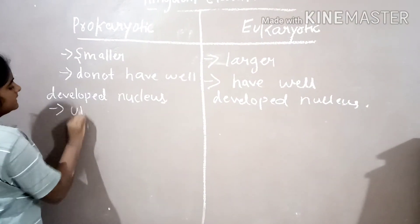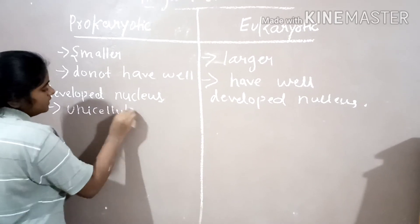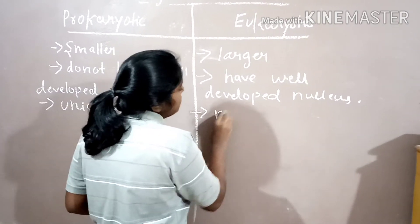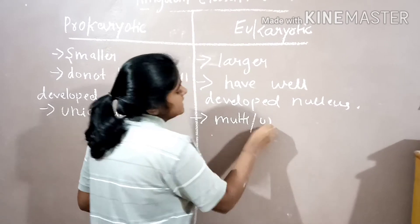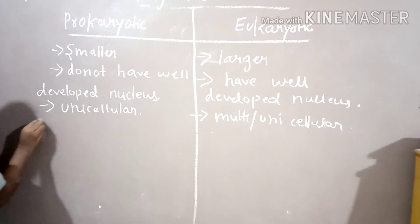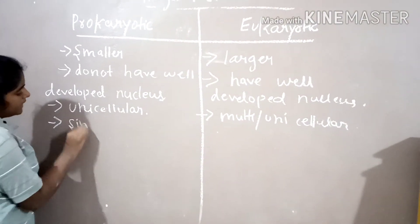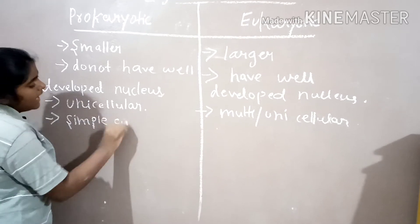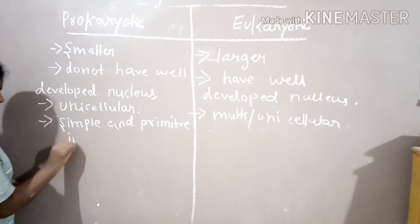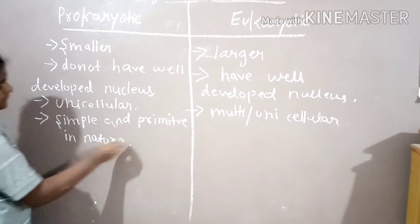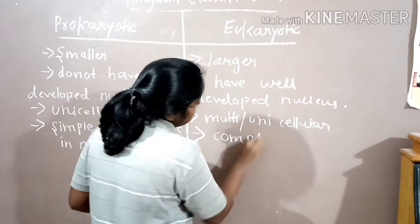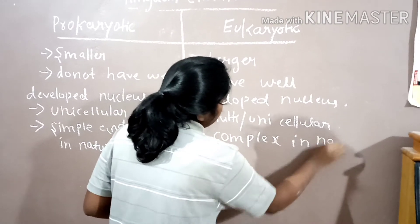Prokaryotic cells are unicellular, they have single cell. Eukaryotic cells are multi as well as unicellular. Prokaryotic cells are simple and primitive in nature. Eukaryotic cells are complex in nature.